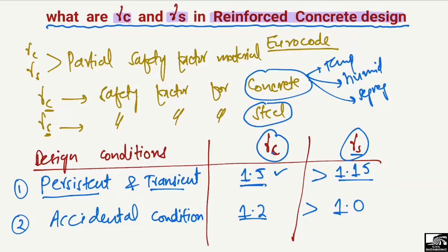For the steel bar, gamma_S is lower because steel bar is manufactured in a factory. There is no need to take a higher factor of safety since there is less uncertainty in the reduction of its strength. Concrete, being manufactured on site, has more variability, which is why its partial safety factor is higher compared to that for steel.